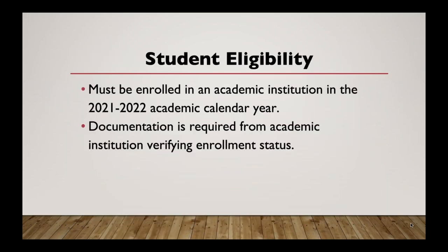If you are a student entering the competitive division, additional documentation is required when you submit your abstract. A letter from your academic institution showing enrollment in the 2021–2022 academic calendar year, or a schedule of classes, will need to be submitted. If you are unable to provide this document, you will unfortunately not be able to participate in the competitive division as a student. However, you can still participate as a practitioner, if applicable, or in the non-competitive division.